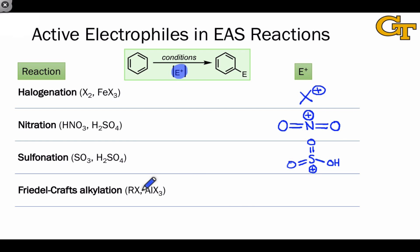Friedel-Crafts alkylation conditions encourage the dissociation of a leaving group, a halogen leaving group, from an alkyl halide RX, and this generates a carbocation R+. We'll also see Friedel-Crafts alkylation reactions where these carbocations are generated through other means, such as protonation of an alkene or protonation of an alcohol followed by the loss of water.